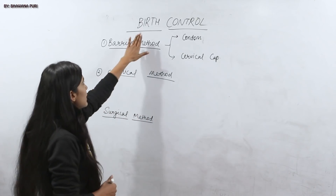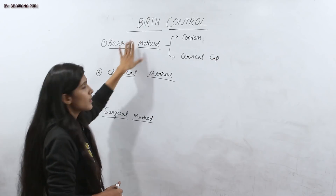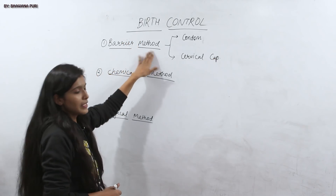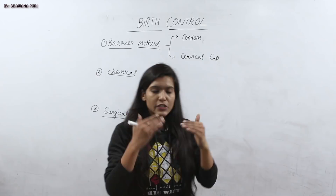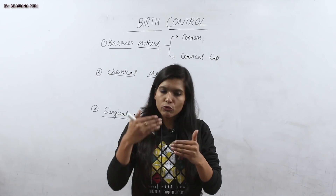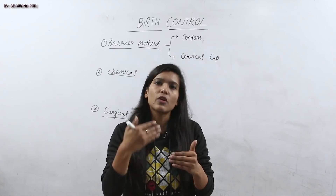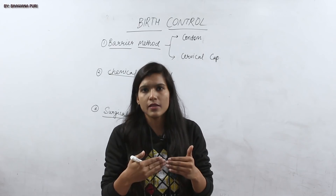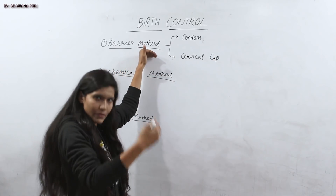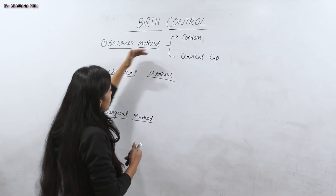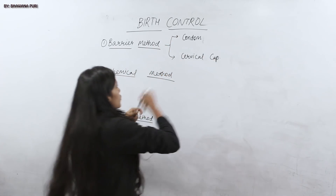The first method of birth control is the barrier method. The barrier method is basically when we have sperm and egg, we do not allow them to fertilize or come into contact with each other. This is called the barrier method. We will talk about the condom and cervical cap.